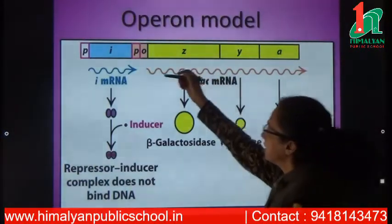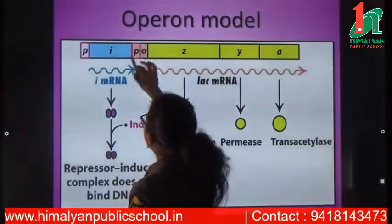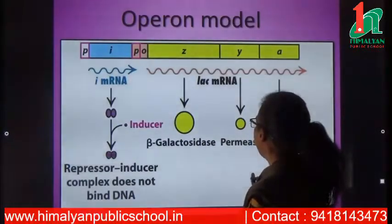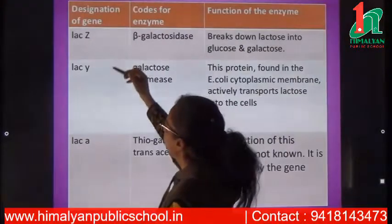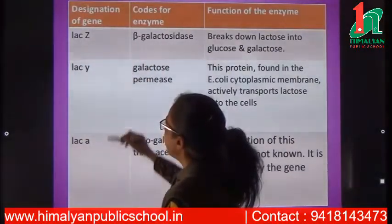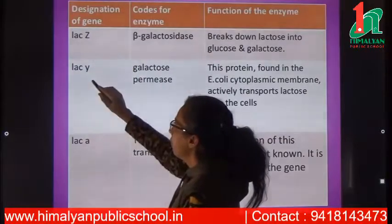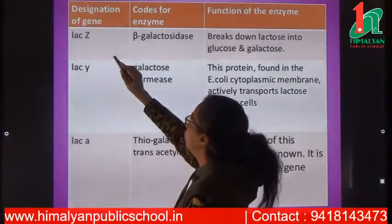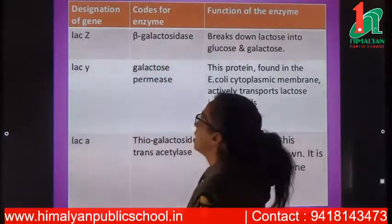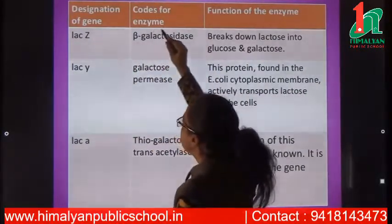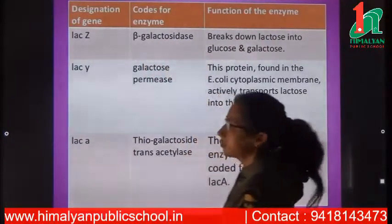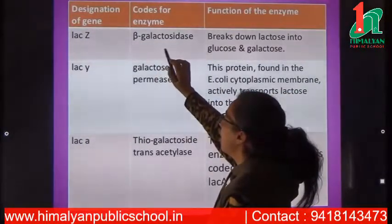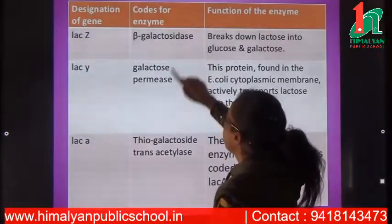There are three structural genes on the operon: lac Z, lac Y, and lac A. The lac Z gene codes for the enzyme beta-galactosidase. The function of beta-galactosidase is to break down lactose — a disaccharide — into glucose and galactose.